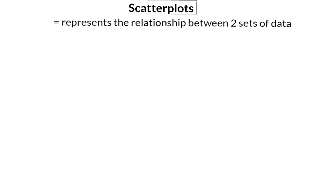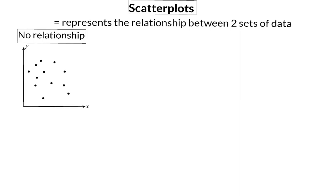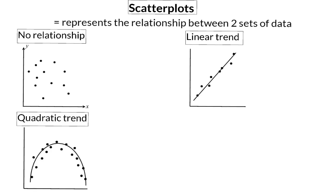The first option is no relationship between the two sets of data. The sets of data can also form a linear trend where all the coordinates form more or less a line, or it can be a quadratic trend or an exponential trend. We focus mostly on the linear trend.